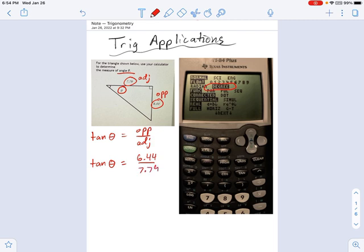So now we have a trig equation. It's really not a complicated one, but I don't want you to go ahead and do the 6.44 over 7.79 yet. What I want you to do is consider doing something to both sides that will get rid of the tangent. I just want theta by itself, I want to know what the angle is.